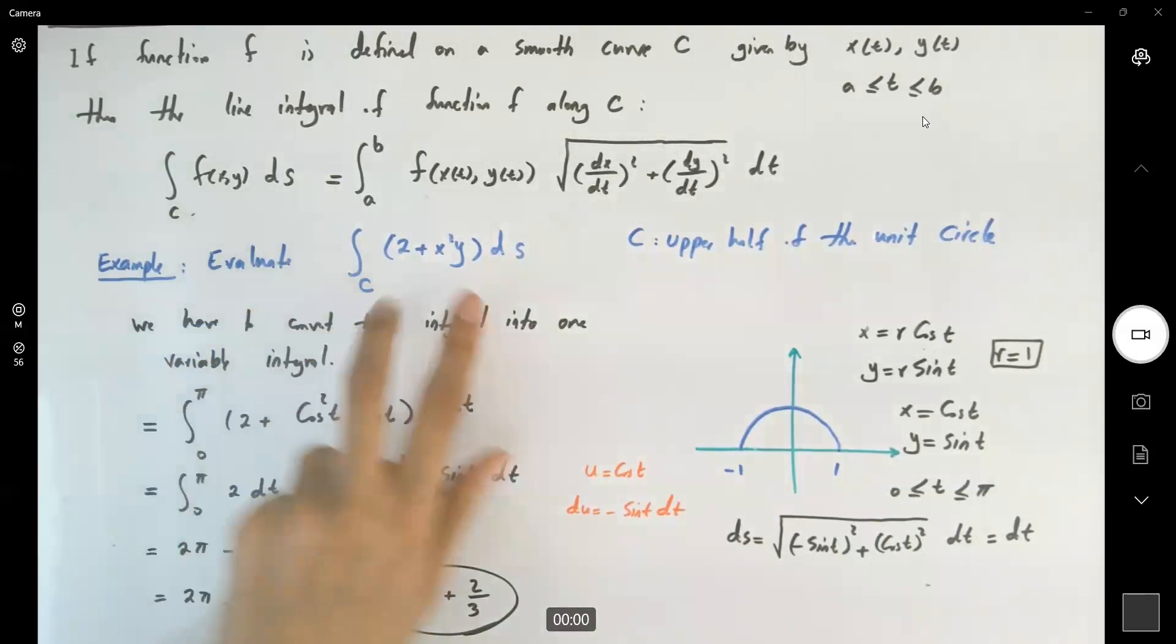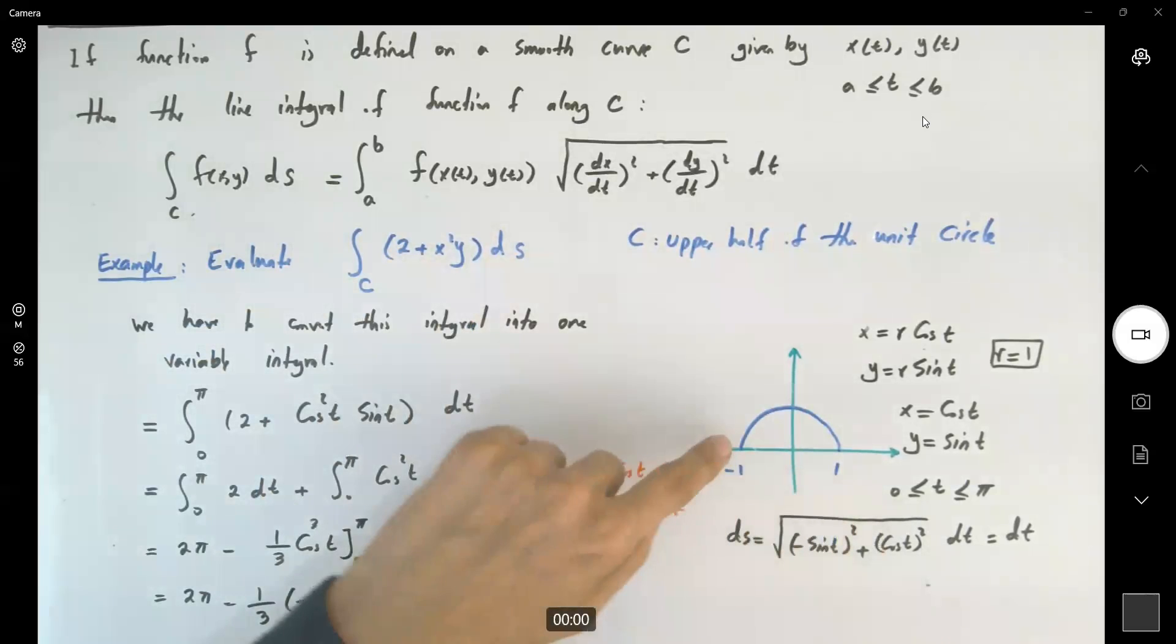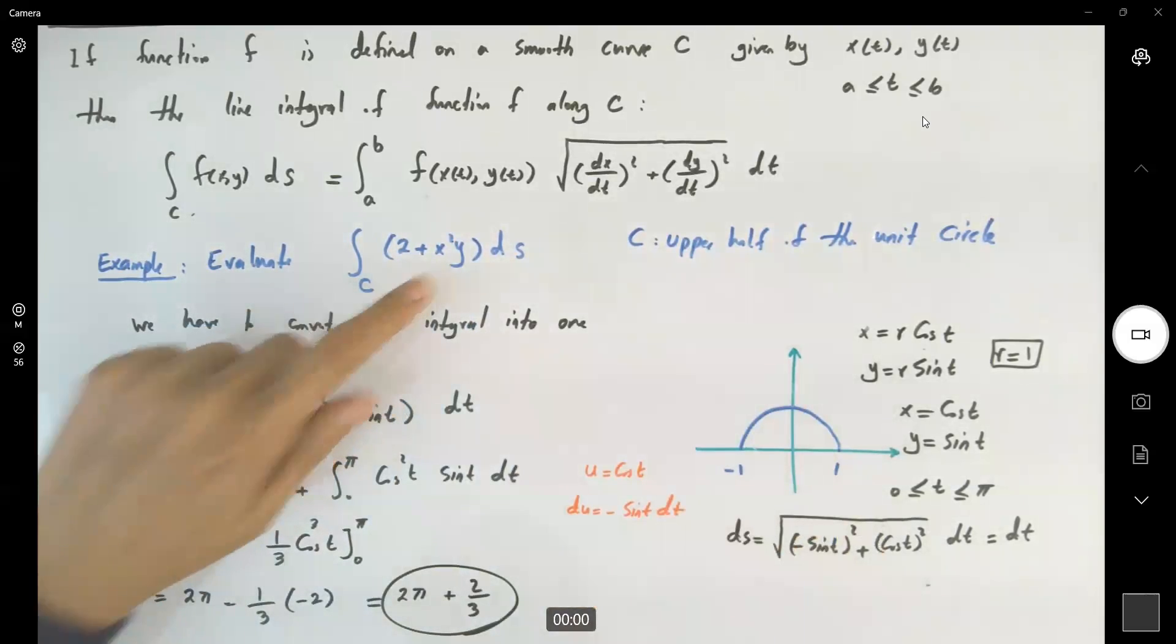Instead of taking the integral of this function over this curve, instead of just taking the integral between negative 1 to 1, you are moving along this half circle and we are calculating this integral.